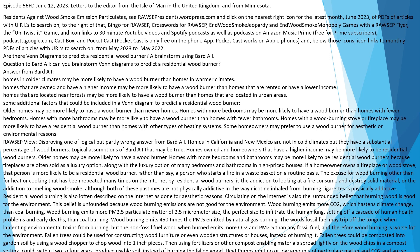RAWSEP view: Disproving one logical but partly wrong answer from BART AI — homes in California and New Mexico are not in cold climates, but they have a substantial percentage of wood burners. Logical assumptions of BART AI that may be true: homes owned by higher-income homeowners may be more likely to be residential wood burners. Older homes may be more likely to have a wood burner. Homes with more bedrooms and bathrooms may be more likely to be residential wood burners because fireplaces are often sold as a luxury option, along with many bedrooms and bathrooms in high-priced houses.